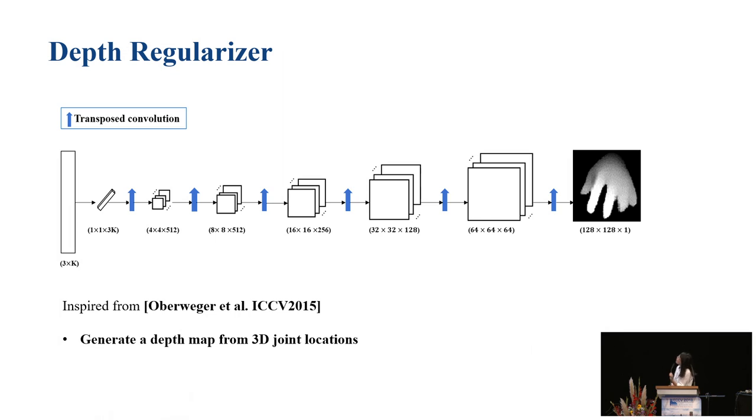For the depth-regularizer, it is inspired from a paper in ICCV 2015, a depth-based method. We try to generate a depth map from the input 3D joint locations, which means given the predicted 3D hand joints, we predict the depth images and use transposed convolution to enlarge the features from low dimension to high dimensional result.